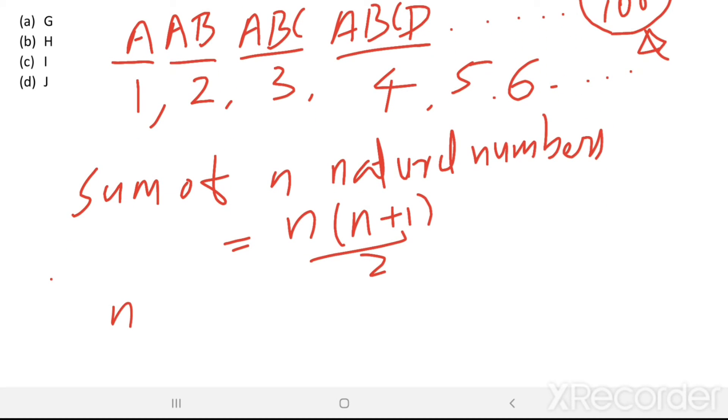Suppose n equal to 10, then sum of first 10 natural numbers equal to 10 into 11 divided by 2 equal to 55.